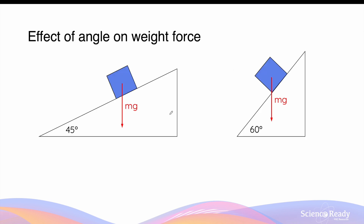The effect of weight force on an object on an inclined surface depends on the actual angle that the surface is inclined at. When analysing the effect of weight force, we need to resolve it into its perpendicular components. We can draw two right-angle triangles to find the two perpendicular components of weight force, regardless of whether the angle is 45 degrees or 60 degrees.